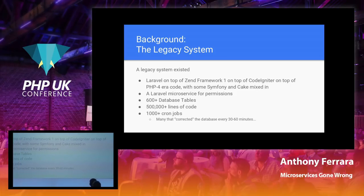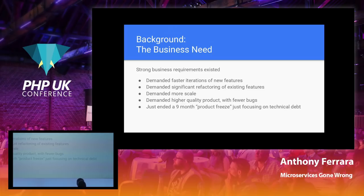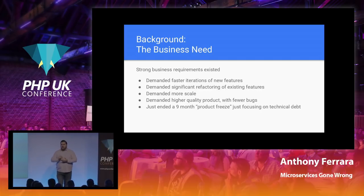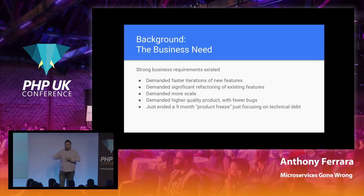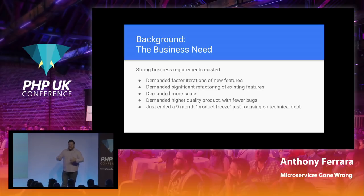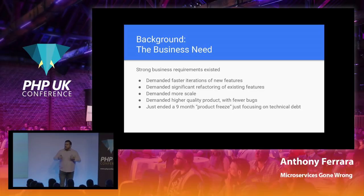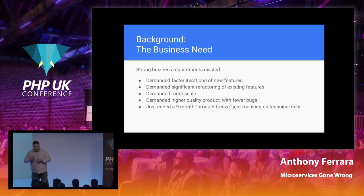This was a huge problem and really slowed everything down. When I joined, they were just ending a nine-month product freeze — no product work happened at the company for nine months. They focused purely on refactoring, moving infrastructure from dedicated hosts into AWS, handling some security compliance requirements, and trying to make the system easier to work with. At the same time, sales did not stop. We had increasing scale requirements — new customers closing with ten times the number of users as our biggest existing customer, and the product wasn't built to scale for that.